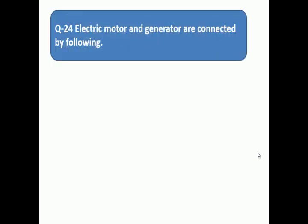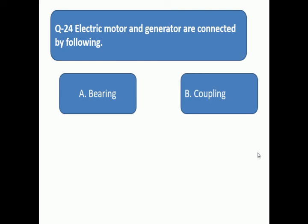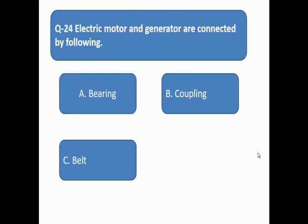Question number 24: Electric motor and generator are connected by the following. Electric motor and generator are connected by which method? A: bearing, B: coupling, C: belt, D: chain.